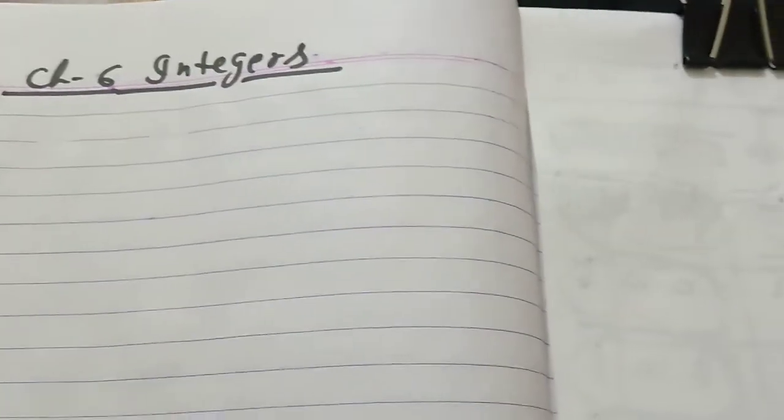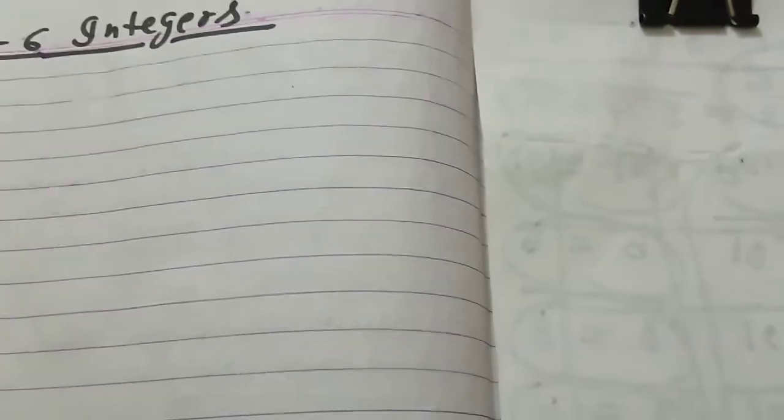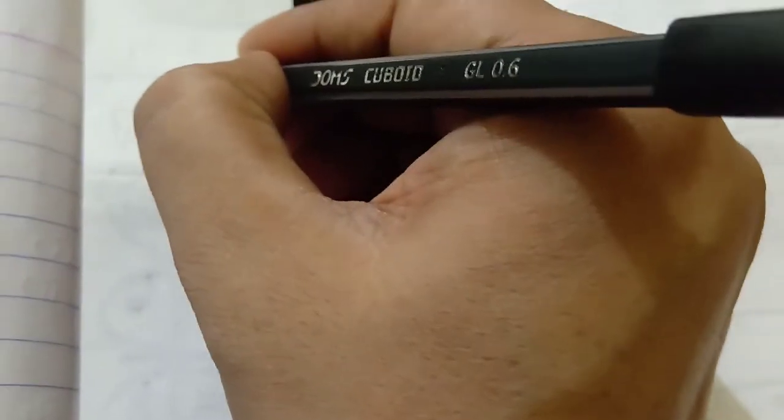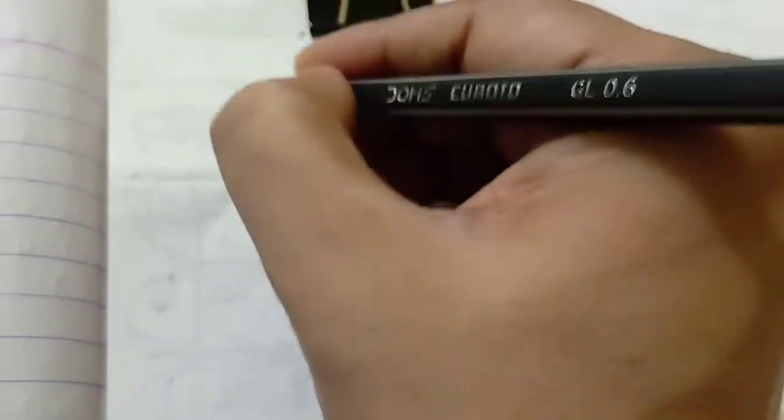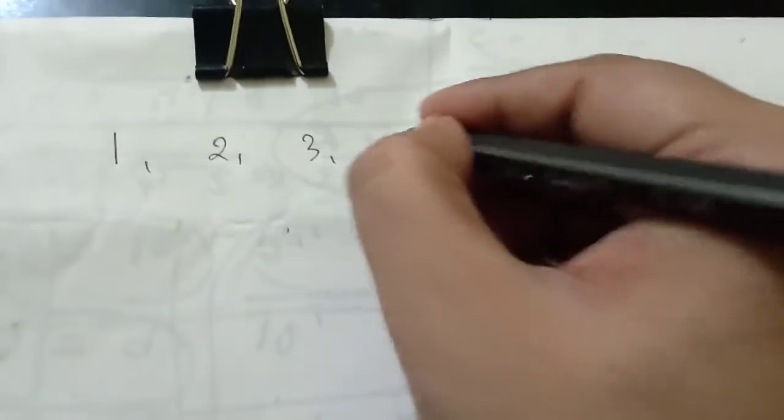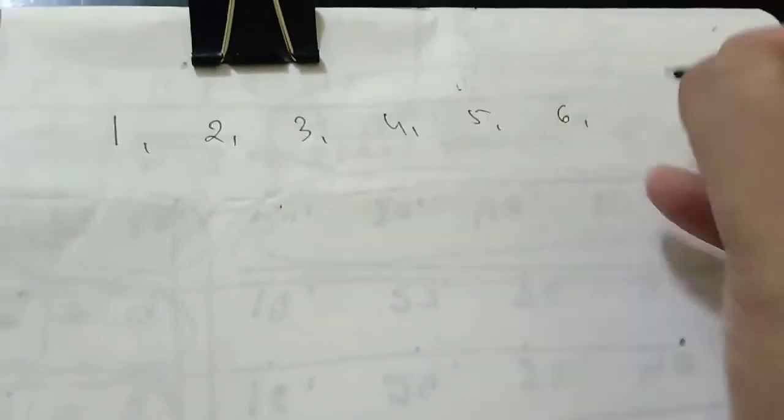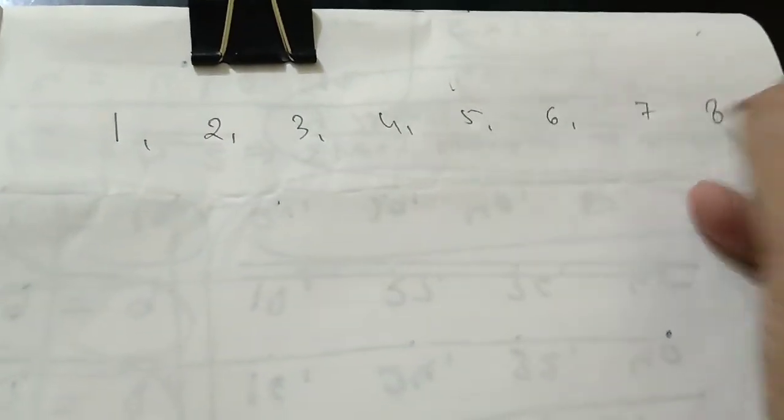First, what are integers? In previous videos, you learned natural numbers. Natural numbers start from 1, 2, 3, 4, 5, 6, 7, etc.